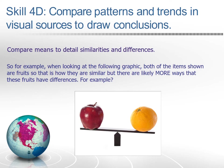Let's take a look at skill 4D: compare patterns and trends in visual sources to draw conclusions. Compare means to detail similarities and differences. When looking at a graphic of two fruits — both are fruits, so that's how they are similar — but there are likely many more ways they differ: color, shape, taste, texture, and where they're grown. That illustrates the idea of what 'compare' means when you see that task verb.